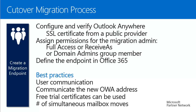Since the cutover migration process uses RPC over HTTPS, also called Outlook Anywhere, you need to install and use a public SSL certificate from a trusted public provider. If you don't have one yet, you may use a free trial certificate, as this is sufficient for the migration. After migration, you no longer need your on-premise Exchange server, so you can drop the on-premise SSL certificate. I suggest creating a dedicated administrator user solely for the migration, with either full access permission to all mailboxes, receive-as permissions, or domain administrator permissions.